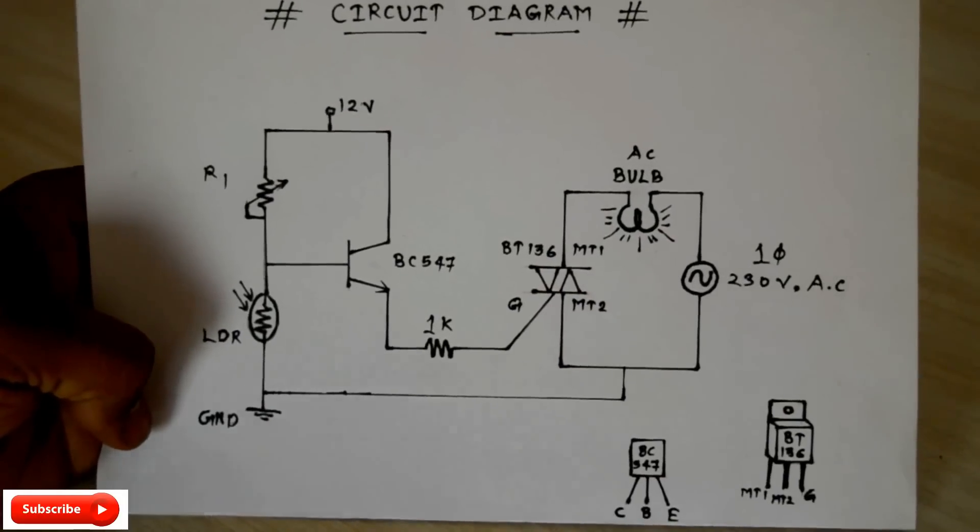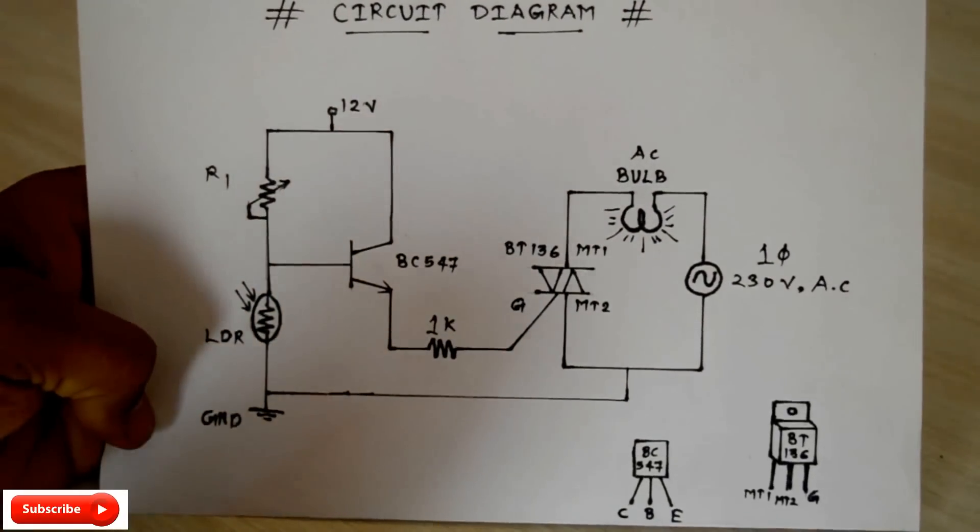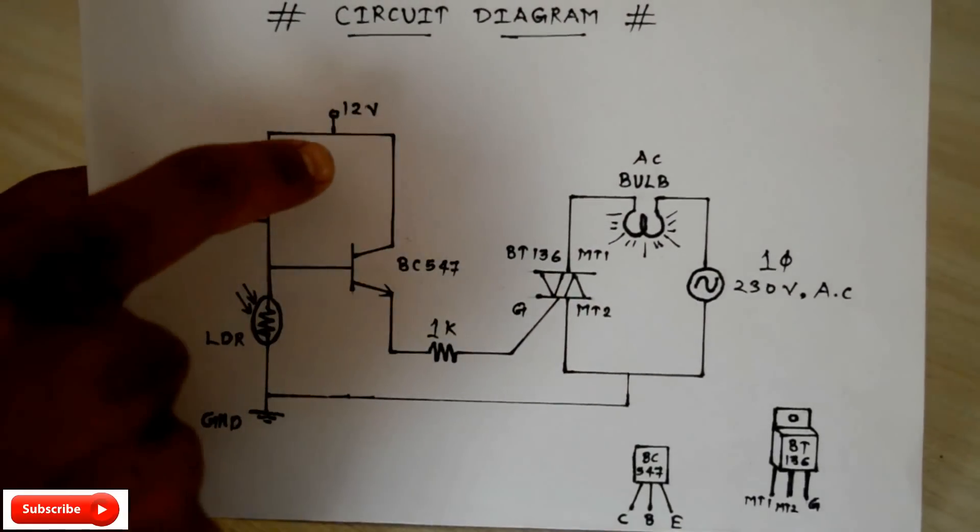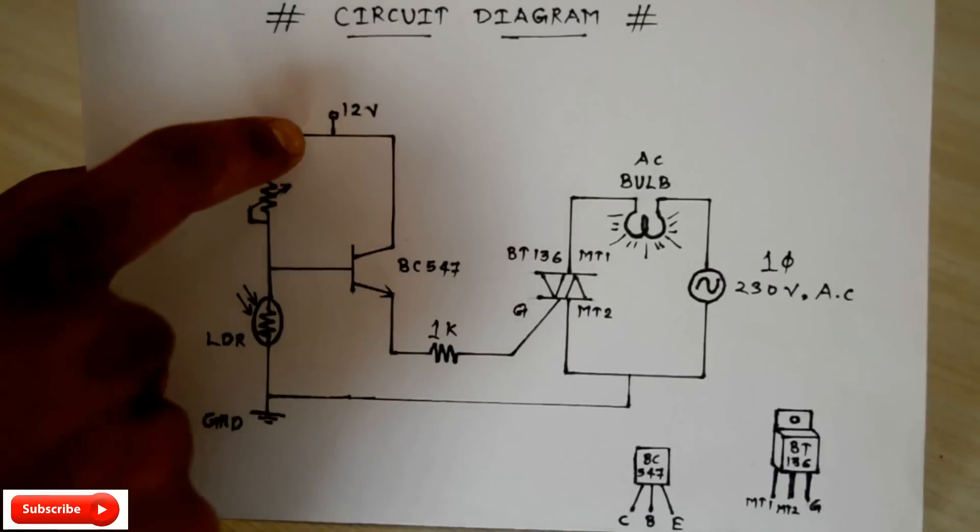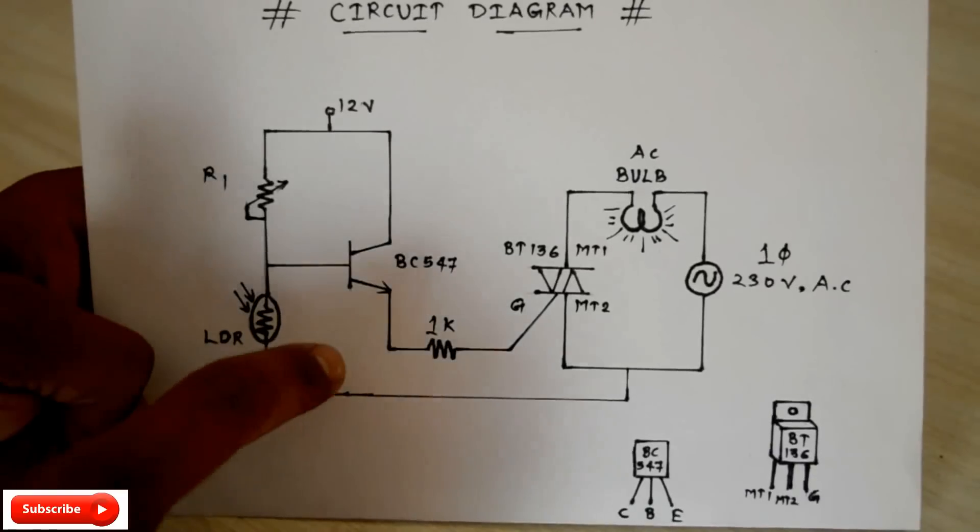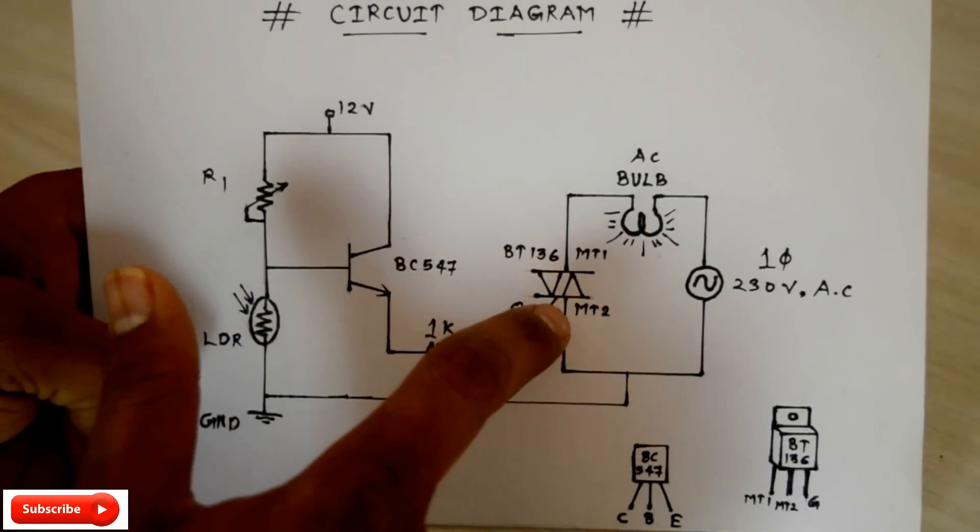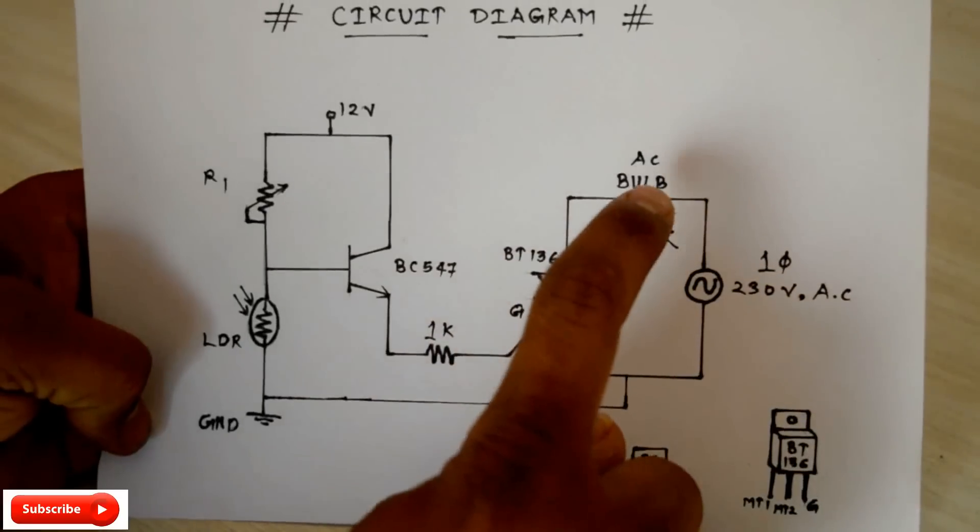If there is no sufficient darkness on that LDR, that time the resistance of LDR is very less, so that's why most amount of current flows through the LDR towards the ground. Hence the transistor cannot turn on. That's why the TRIAC cannot be triggered and the bulb is not on.